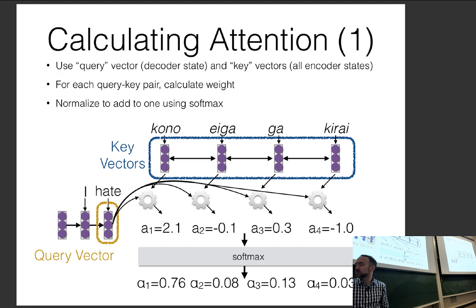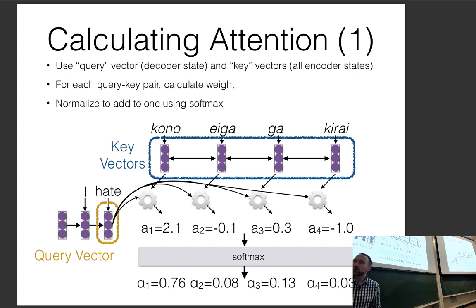A student asks why softmax rather than L2 normalization. People have tried alternatives like sigmoid, which normalizes values between zero and one so you can focus on multiple inputs. Empirically, softmax works well — it's especially good for machine translation because it creates a strong inductive bias that one word is translating into another word. For other tasks, other normalization approaches would be perfectly reasonable to try.